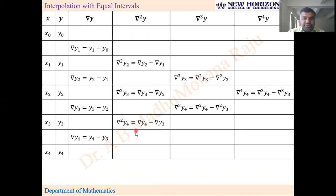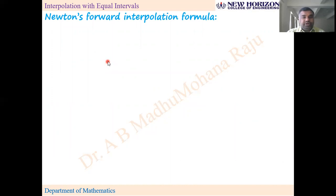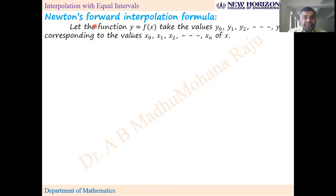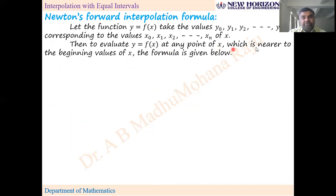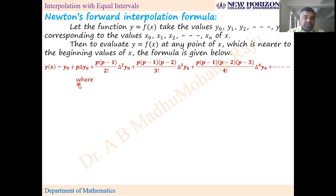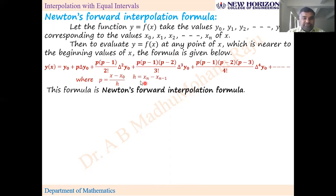Newton's forward interpolation formula: let y = f(x) take values y₀, y₁, y₂, ..., yₙ corresponding to x₀, x₁, x₂, ..., xₙ. To evaluate y = f(x) at any point x nearer to the beginning values of x, use Newton's forward interpolation formula. Here p = (x − x₀) / h and h = xₙ − xₙ₋₁, the difference between any two successive x values.